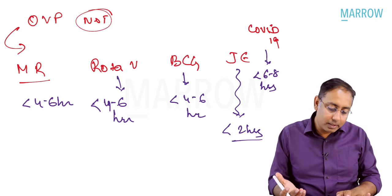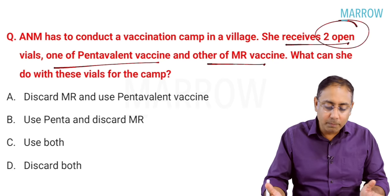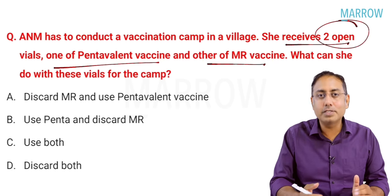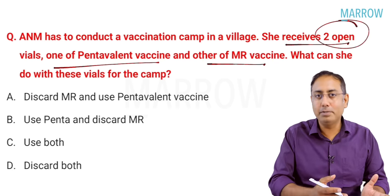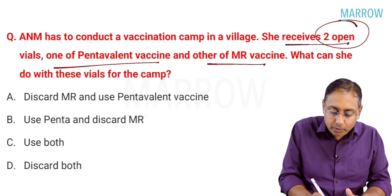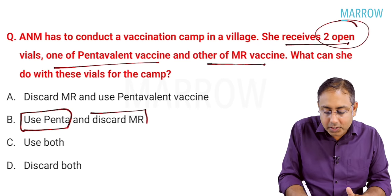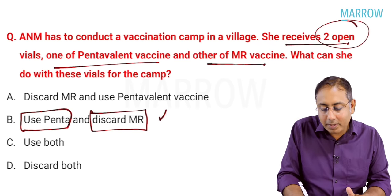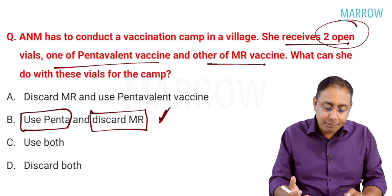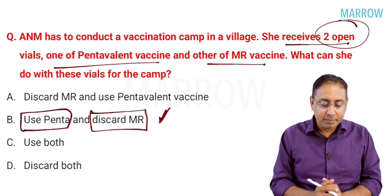So the answer is straightforward: use the pentavalent vaccine and discard the measles-rubella vaccine. This is a direct MCQ if you know the open vial policy.